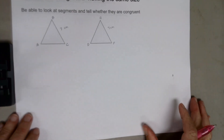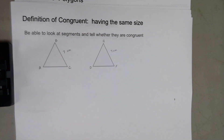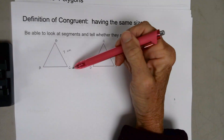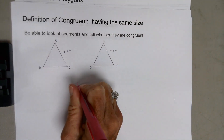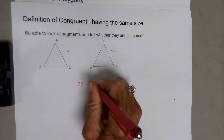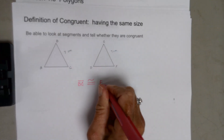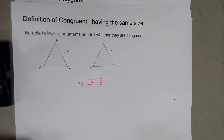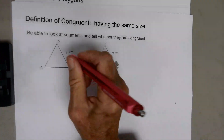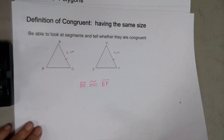The definition of congruency means having the same size. You need to look at segments, tell whether they're congruent, and write a congruency statement. On these two triangles, BC would be congruent to EF. The congruency mark is an equal sign with a tilde above it. They might also show congruency with matching tick marks rather than giving actual measurements.